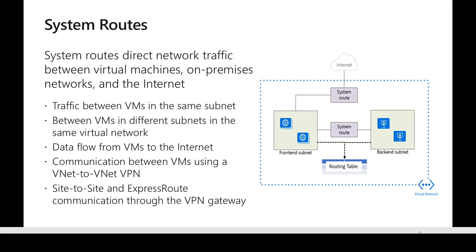Whenever we want to change the flow of traffic from a source to a particular destination, that's when we use something called routes. If we compare routes with Network Security Groups or NSG — NSG will either allow or deny a certain flow of traffic, whereas routes help in altering the way traffic traverses. That's the difference between NSG and a route.